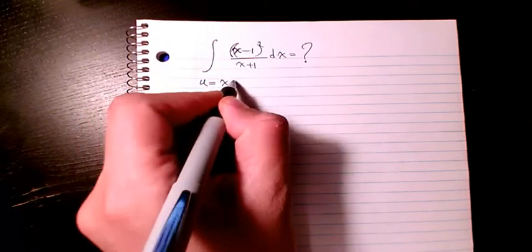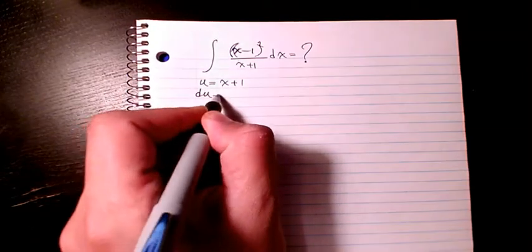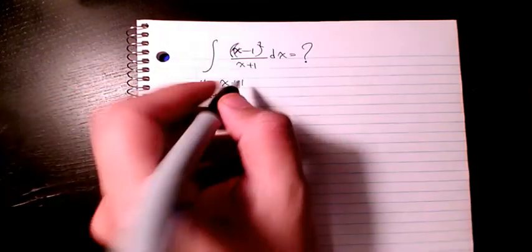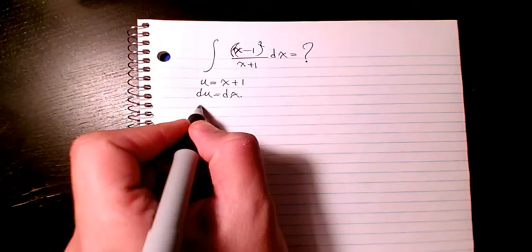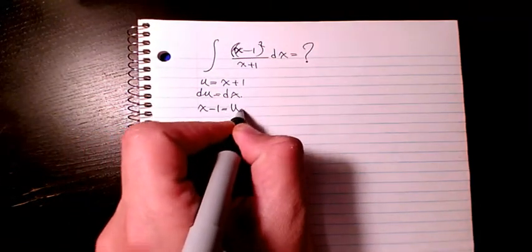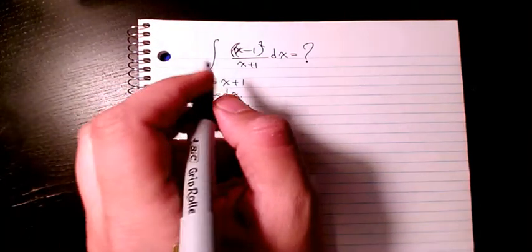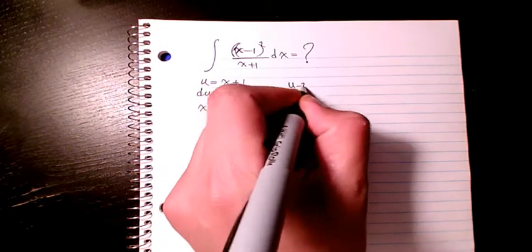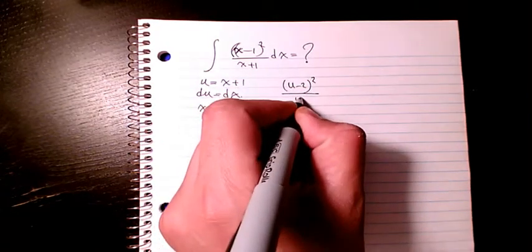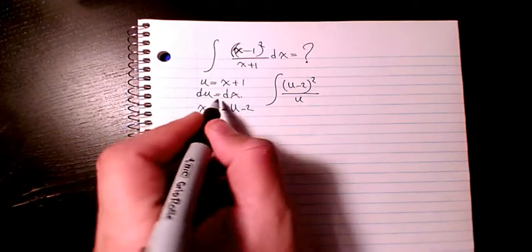of x+1, I'm gonna write u. So du will be equal to dx. So in here, x-1 is gonna be u-2. So it's gonna be (u-2)² divided by u, and du is gonna be dx.